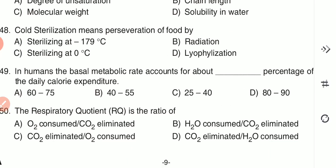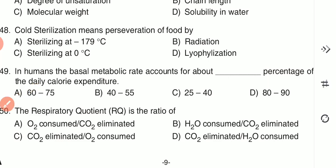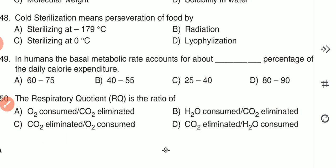Question 49: In humans, the BMR (basal metabolic rate) accounts for about what percentage of daily calorie expenditure? (A) 60–75%, (B) 40–55%, (C) 25–40%, or (D) 80–90%. The answer is A — 60 to 75% is the BMR rate for daily calorie expenditure.